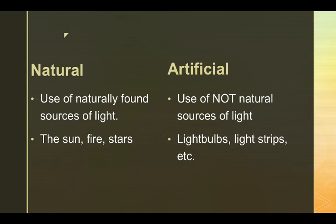Natural light is any source of light that comes from naturally found sources — the sun, fire, and stars are all natural light sources. Artificial lights are any source of light that comes from non-natural sources.